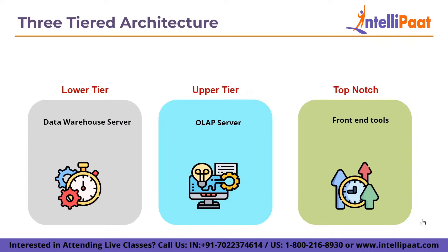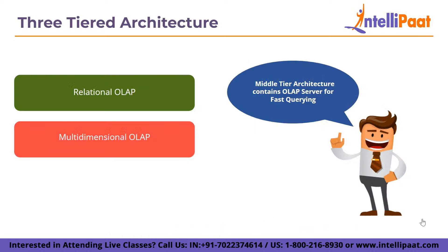The middle tier includes the OLAP server for quick data warehouse queries. To implement the OLAP server, there are two models: first, relational OLAP (ROLAP), an extended relational database management system that converts multi-dimensional data functions into common relational operations; and second, multi-dimensional OLAP (MOLAP), a special-purpose server that carries out multi-dimensional operations directly, including a data mining tool for OLAP-generated data and front-end tools for showing findings.